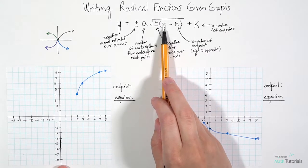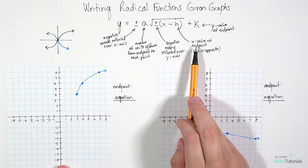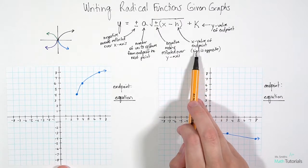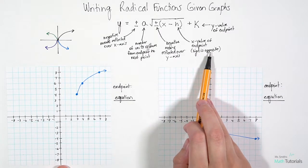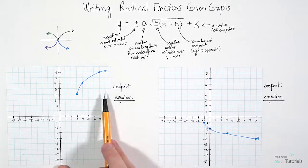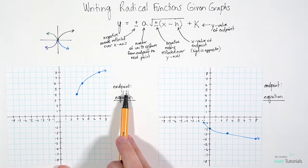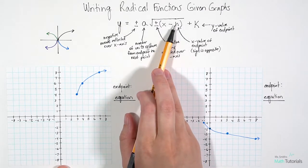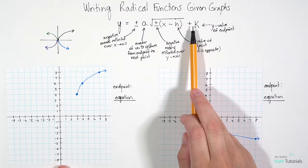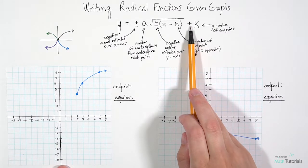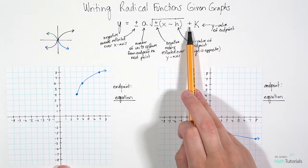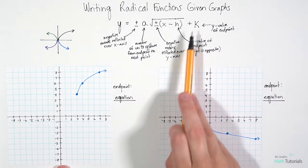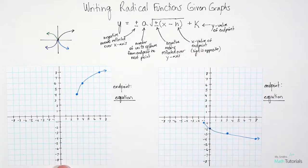Our x is just going to stay x, and then our h is going to be the x-value of the endpoint, but the sign is going to be the opposite. We'll figure out what the endpoint is, flip the sign, and that's what goes in there. The k on the outside is the y-value of the endpoint, and whatever sign it has — positive or negative — that's the sign we keep.